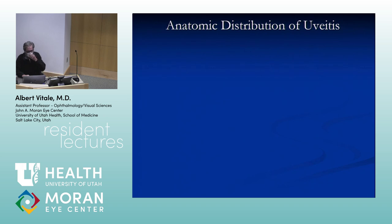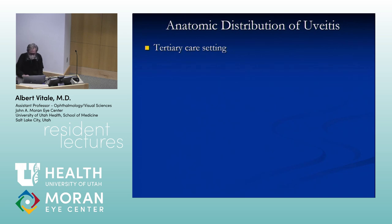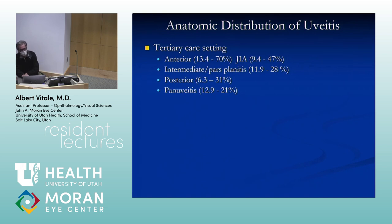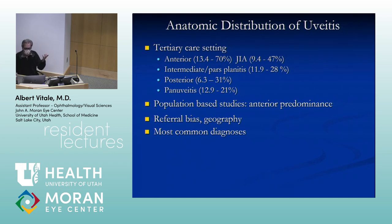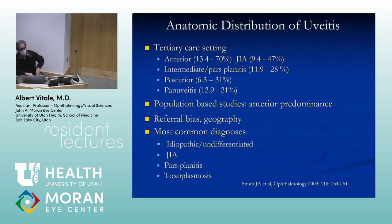The two most common anatomic distributions in a tertiary care setting are anterior and intermediate uveitis. In general practice you'll see mostly anterior uveitis, influenced by referral bias. The most common diagnosis overall is idiopathic — or 'undifferentiated' as the nomenclature now says. JIA would be second, then pars planitis, and the most common infectious etiology is toxoplasmosis.